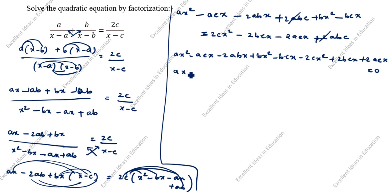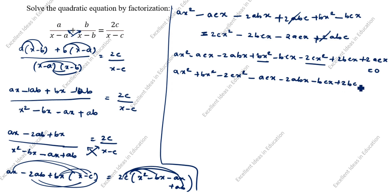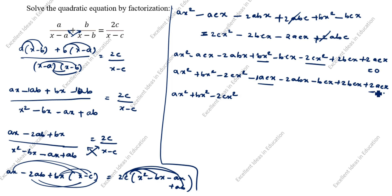Now we will combine x squared terms: AX squared plus BX squared minus 2CX squared. Then combine x terms: minus ACX plus 2ACX gives plus 1ACX. Minus 2ABX. Minus BCX plus 2BCX gives plus 1BCX. So the equation becomes: x squared times (A plus B minus 2C), plus x times (AC minus 2AB plus BC), equal to 0.